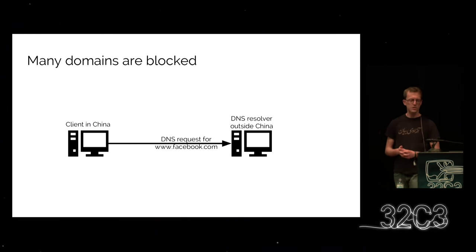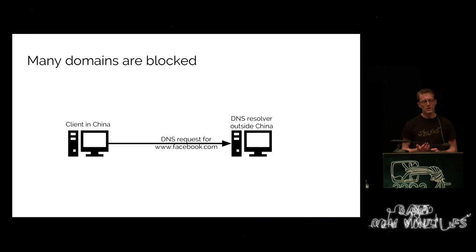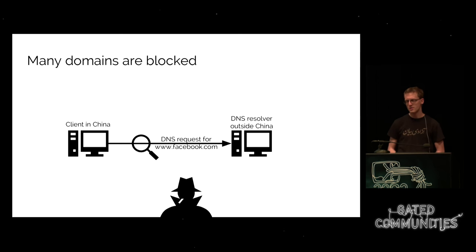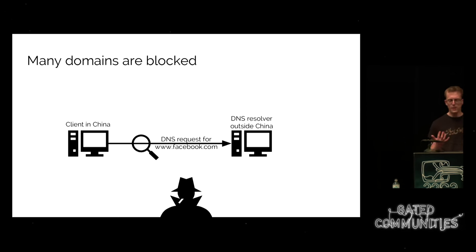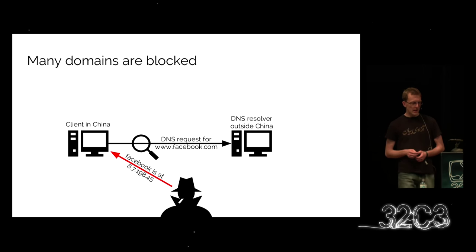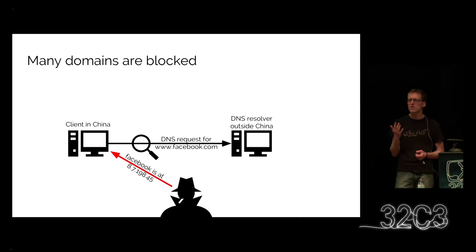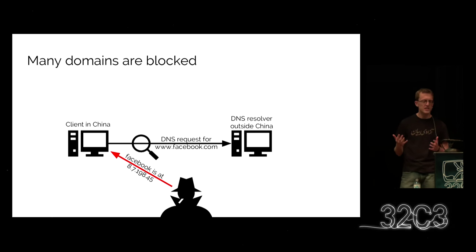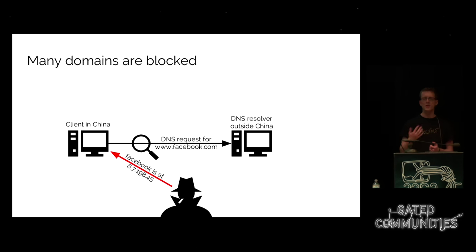A lot of domains are blocked — this is off-the-shelf DNS poisoning, there's really not that much special about it. Imagine a user in China trying to connect to a web server outside the country. Your traffic is subject to deep packet inspection — that shady person represents a DPI device. It looks at your traffic and if it finds patterns that match censored traffic, you get a bogus response. I didn't make this IP address up — this is actually what I got when trying to resolve Facebook.com in China.